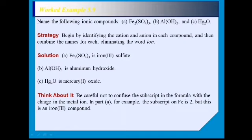Going back to the first example: in iron(III) sulfate, Fe2(SO4)3, the subscript on iron is 2, but this is an iron(III) compound. The Roman numeral III denotes the charge shared with sulfate. By reversing the criss-cross, you return 3 to iron — making it +3 — and return 2 to sulfate — making it 2 negative. So iron is the cation, and the compound is iron(III) sulfate.